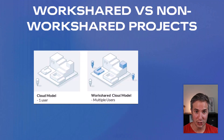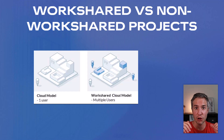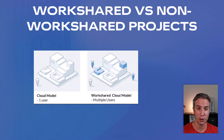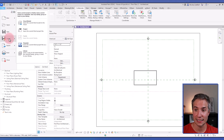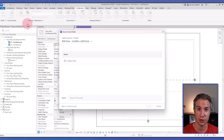Now let me explain the difference between a workshared and a non-workshared project. A workshared cloud model means different users are working at the same time on the same Revit project on the cloud, and that requires both Revit and the BIM Collaborate Pro license. However, without BIM Collaborate Pro, you can still use the cloud with a single user working on a single Revit model at a time. If you're a solo practitioner doing small houses, for example, you can still use the cloud with just your Revit subscription. Inside Revit, if you want to save a file as a single cloud project, go to Save As and select Cloud Model — this is for a non-workshared Revit cloud model that only a single user can modify at the same time.